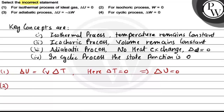Second option: for isochoric process, W is equals to zero. Now W for an ideal gas is defined as P times delta V. The key point here is that for an isochoric process, delta V is equals to zero since volume is constant. Therefore, it implies W is equal to zero. So the second option is also correct.